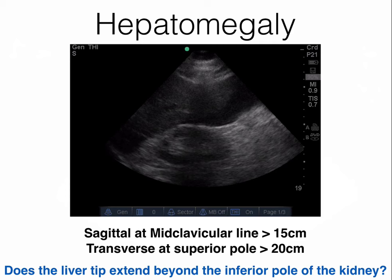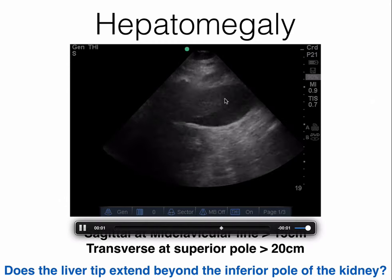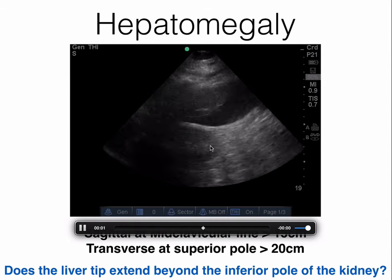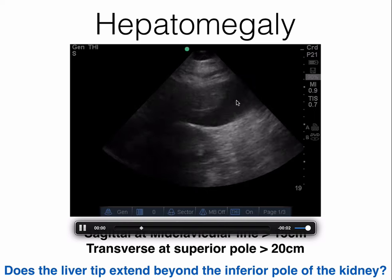There are some measurements you can perform to estimate liver size. If you measure the liver length in the mid-clavicular line it should be less than 15 centimeters; a coronal measurement from the superior pole to the medial edge should be less than 20 centimeters. However, there is a lot of variability to these measurements and they're time consuming. What I would recommend is a global view looking at the inferior liver tip — if it extends past the inferior pole of the kidney, you're looking at someone who probably has hepatomegaly.